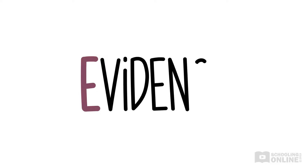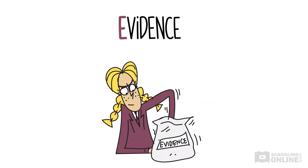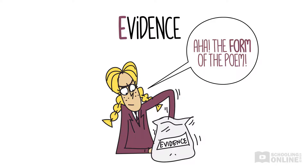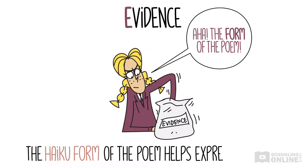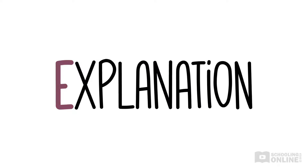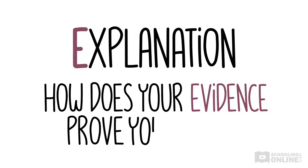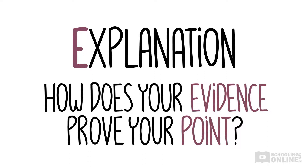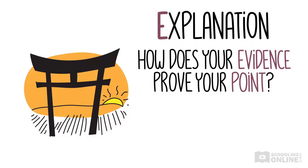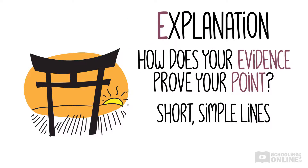Next, E stands for Evidence — you want to provide some evidence for the point that you've just made. We want to talk about the form of the poem, which helps communicate Matsuo's big idea. So you might say: the haiku form of the poem helps express this idea. The next E stands for Explanation — you need to explain the evidence that you've just given. You can't just identify the form of the poem; you need to unpack how it proved your point. A good way to do this would be to say that describing the image of a sunset using the short, simple lines of a haiku helps capture a single moment of wonder and awe.